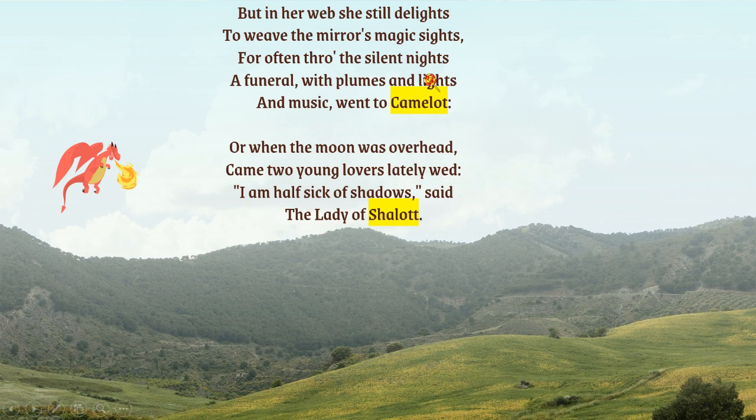In her web she still delights to weave the mirror's magic sights. For often through the silent nights a funeral with plumes and lights and music went to Camelot, or when the moon was overhead, came two young lovers lately wed. When the Lady of Shalott sees this image, she speaks — and this is one of the rare occasions in the poem where we hear her voice — saying 'I am half sick of shadows,' said the Lady of Shalott. This part, 'I am half sick of shadows,' is actually the climactic moment of the poem, when she makes a decision. That decision will be seen and discussed in the next video.